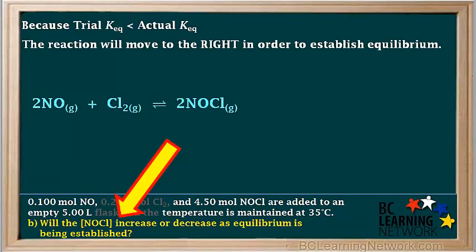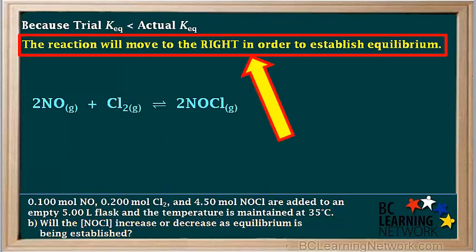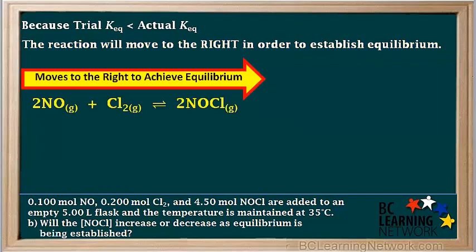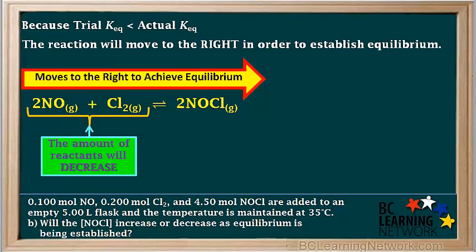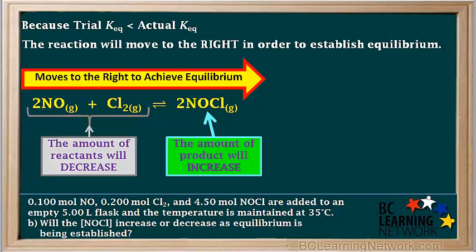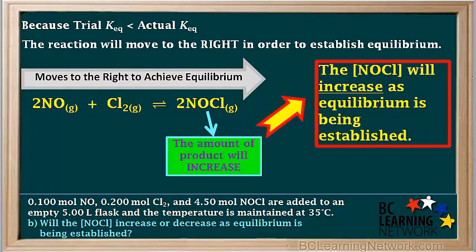Now we are ready to answer part B: will the concentration of NOCl increase or decrease as equilibrium is being established? We found in part A that because trial Keq is smaller than the actual Keq, the reaction must move to the right. When the reaction moves to the right, reactants form products, so the amount of reactants decreases and the amount of products increases. Because NOCl is a product, the concentration of NOCl will increase as equilibrium is being established.